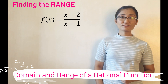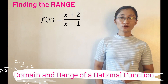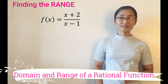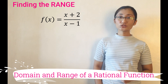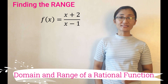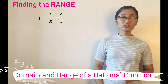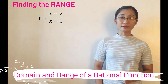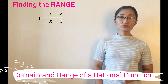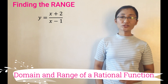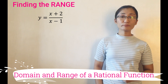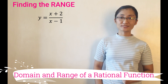To solve for the range, let us go back to the given function f(x) = (x+2)/(x−1). Take note that f(x) can also be expressed as y, so this can also be written as y = (x+2)/(x−1). The goal is to define x in terms of y in order to see if there will be any restriction for y values.